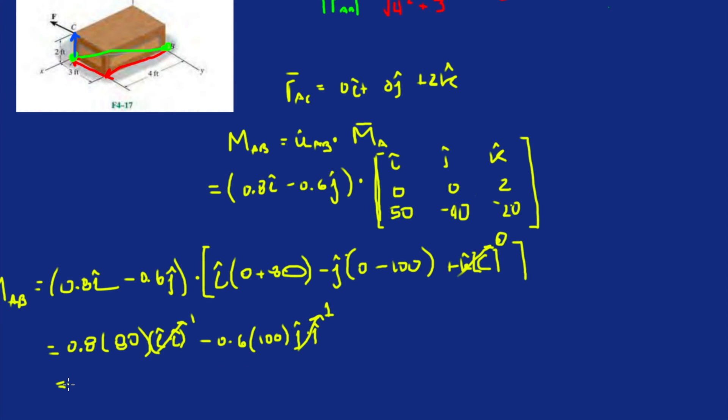We're left with 0.8 times 80, which is 64, minus 60, and that'll be 4 pound-feet. All right.